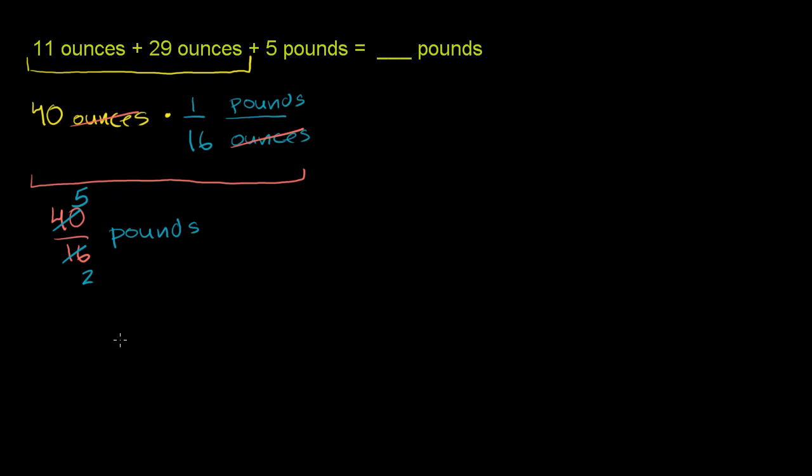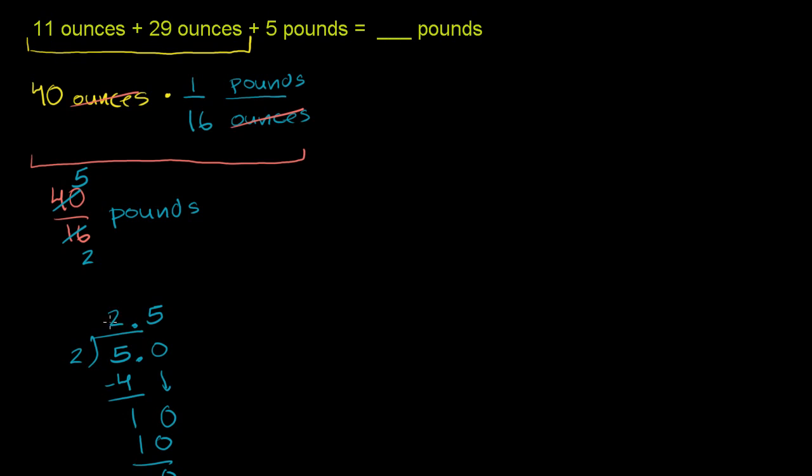This is 5 divided by 2. 2 goes into 5 two times. 2 times 2 is 4. Subtract and you have a remainder of 1. Let's put the decimal and bring down a 0. 2 goes into 10 five times. 5 times 2 is 10, with no remainder. So this is exactly 2.5, which makes sense. 5 over 2 is the same as 2 and 1 half, which is 2.5.